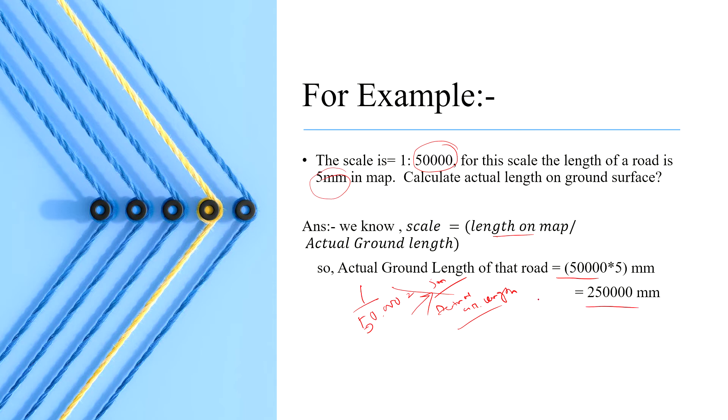If they provided the actual length is 2,500,000 mm, then the accuracy of this plotting is high. But if they provided a different actual length for that road, then the accuracy becomes very low. We have to understand these things.